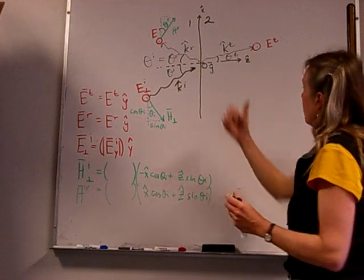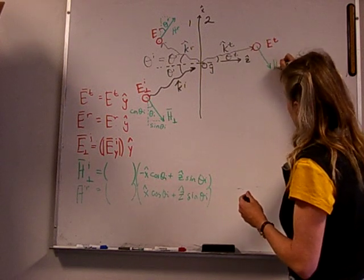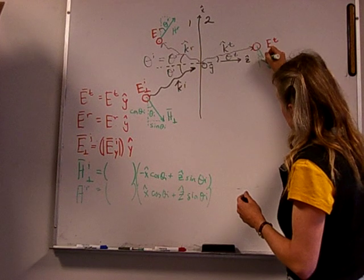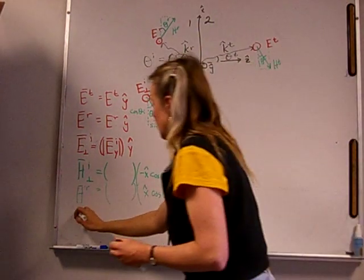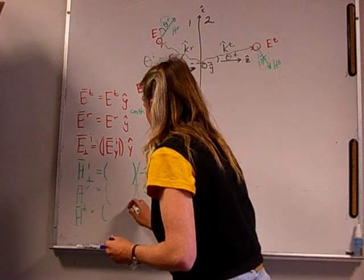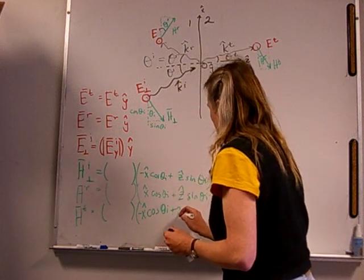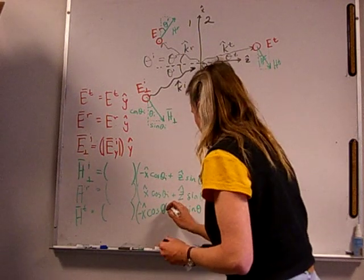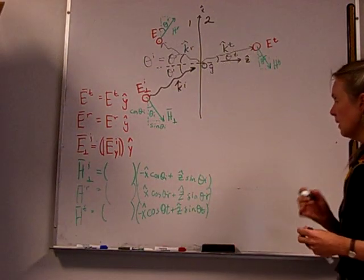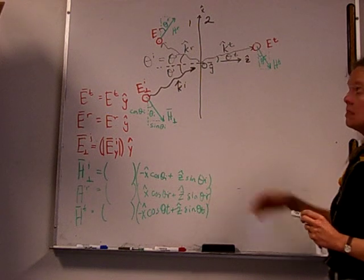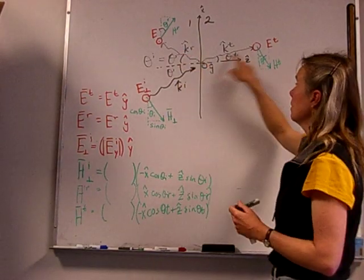Now let's look at the transmitted field. Here's the direction of propagation, here's my electric field, and my magnetic field is going down on the board. Here is HT, and this angle is theta T. So we've got a positive Z and a negative X component. H transmitted has a magnitude, then a negative X direction cosine of theta T, plus a positive Z direction sine of theta T. Note that theta R and theta I are equal. So that's given us the polarization of all six vectors in our picture. The next thing we're going to analyze is the direction of propagation of each of these plane waves.